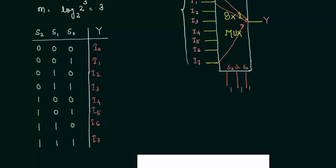Now we have to see for the expression y is equal to, let's see for the first case I am having s2 complement, s1 complement, s0 complement, i0. Similarly, for the second case it is s2 complement, s1 complement, s0, i2.